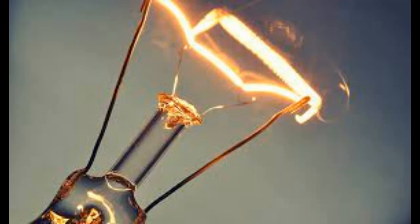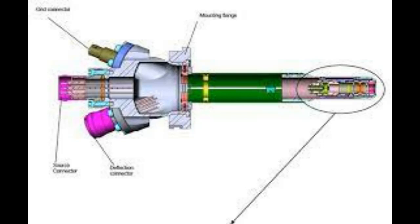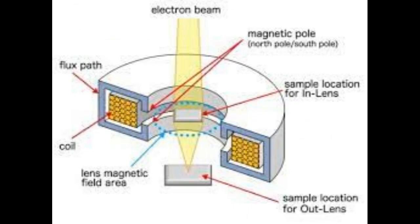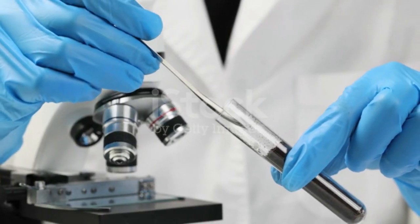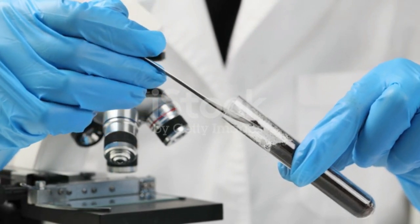4. Specimen Preparation. Detailing the meticulous process of preparing specimens for electron microscopy. This may include techniques such as freeze fracturing, staining, or coating with thin layers of metal, depending on the type of electron microscopy being employed.